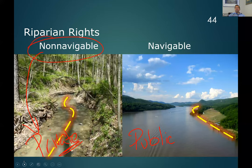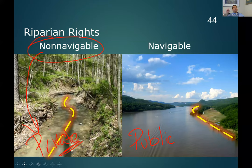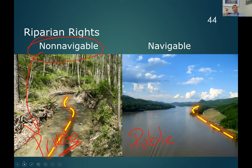On that private body of water, the property owners have the ability to tell other people they can't fish in that stream, because the water actually belongs to them. But on that public body of water, you can't restrict anybody from being on that water. You can restrict them from accessing your shoreline, but not from being on the water itself.